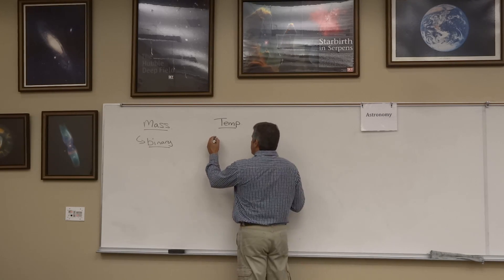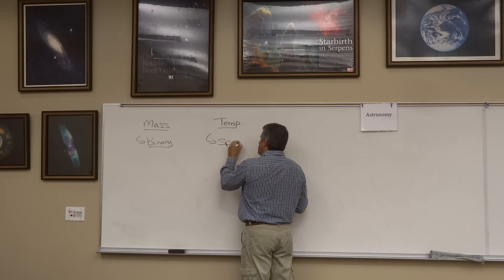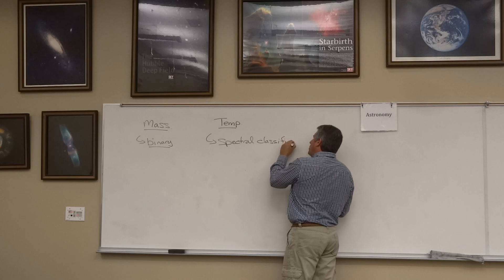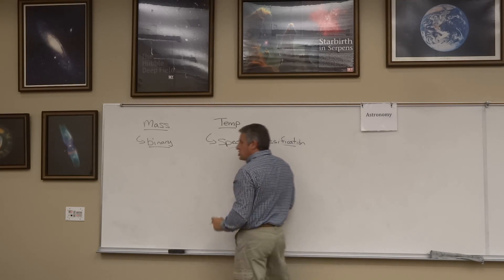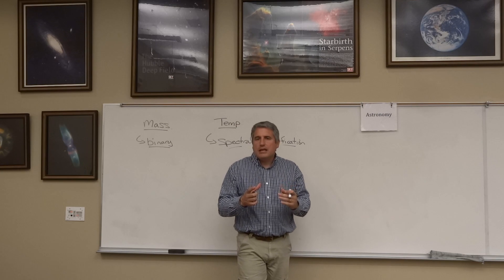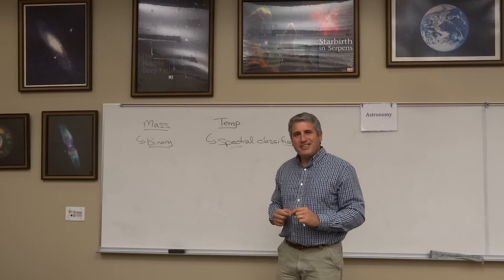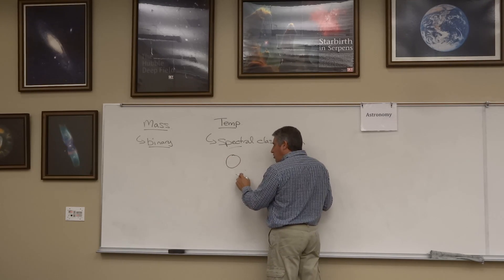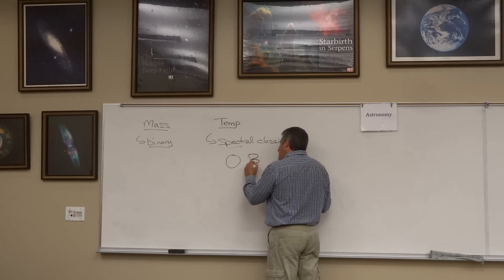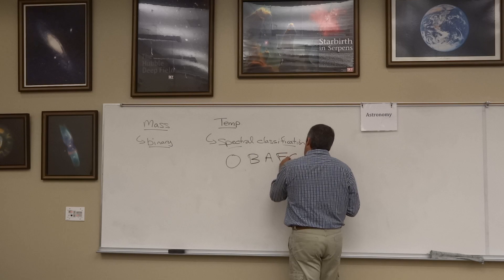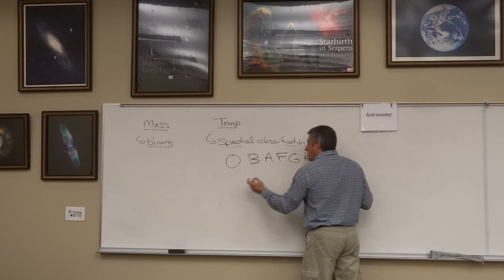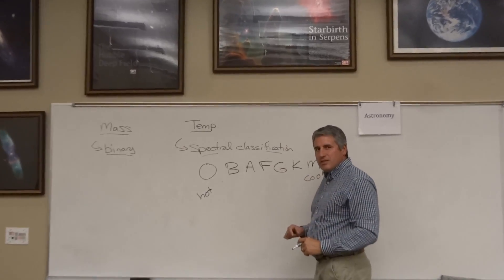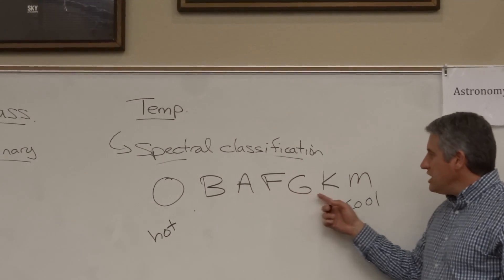She discovered spectral classification. Without worrying about the exact color of a star, she could determine its temperature by the intensity of the spectral lines. She labeled the hottest stars the O stars, then B, A, F, G, K, and M. The hottest stars are the O stars; the coolest are the M stars: O, B, A, F, G, K, and M.